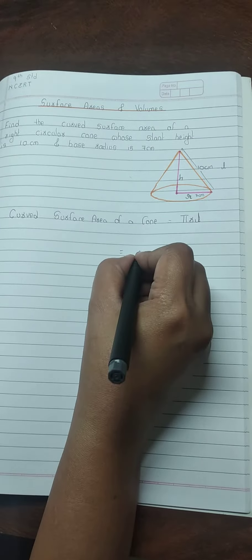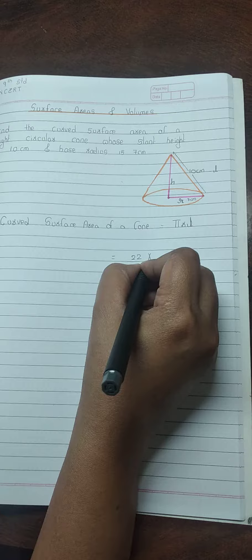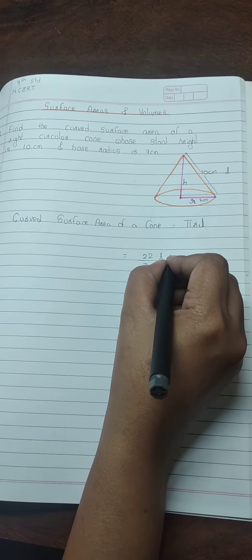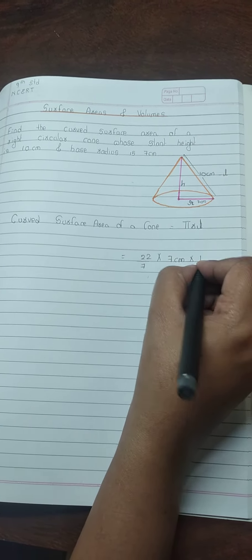Pi value will take as 22 upon 7. Radius is 7 cm and slant height is 10 cm.